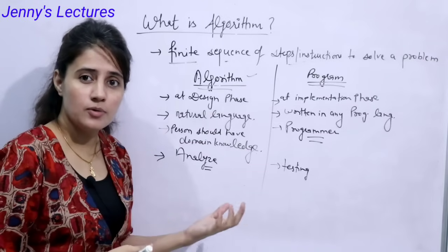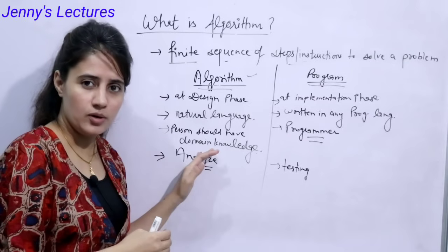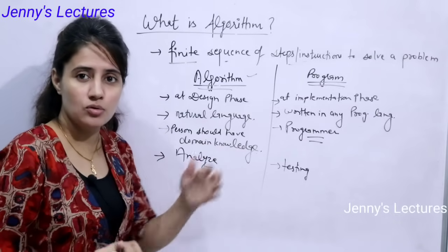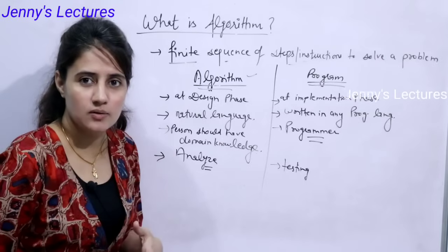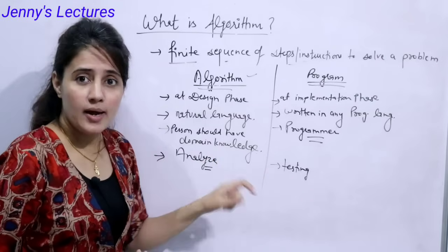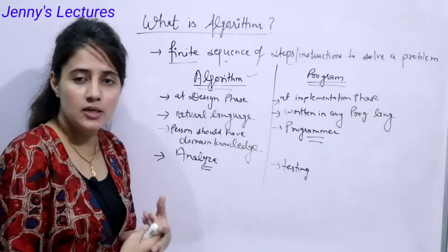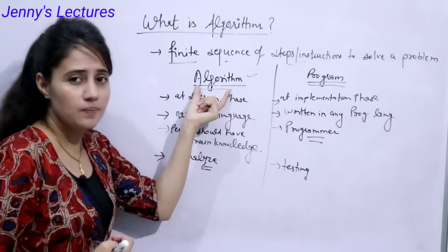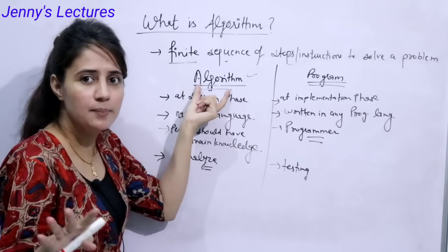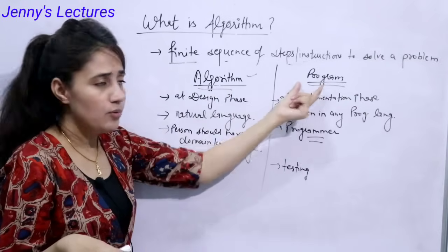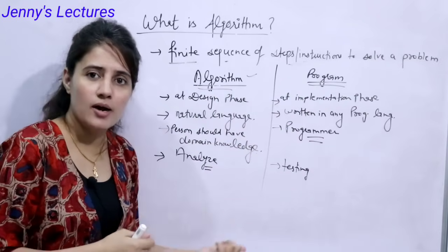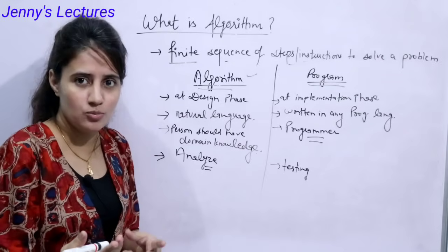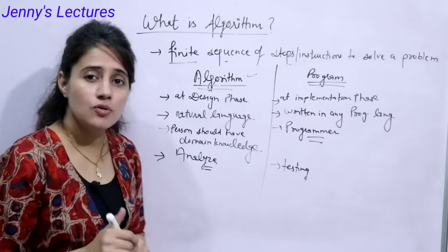Algorithms are written in a natural language like English, simply on paper or in a text editor like MS Word, Notepad, or Wordpad. Programs, however, require an IDE to write. So you can say algorithms are hardware and software independent, whereas programs are dependent on the hardware, software, and operating system being used.